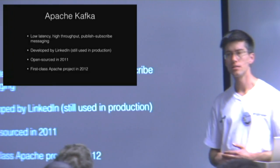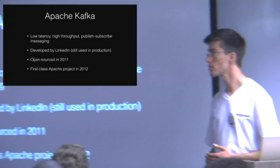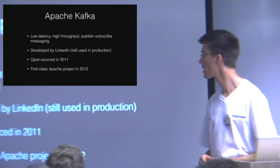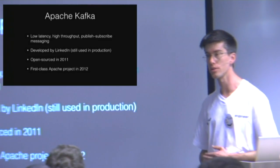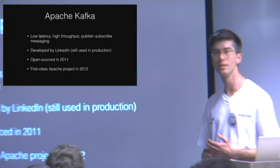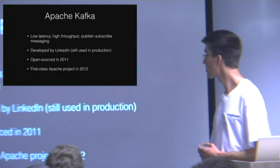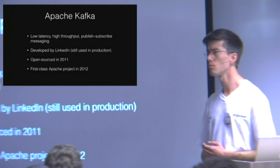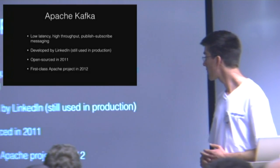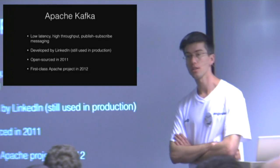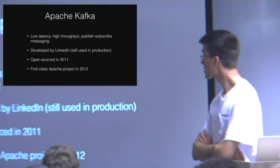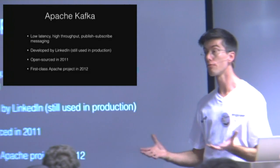It was originally invented by LinkedIn. They handle lots and lots of traffic. The most recent article with a number was written in March of this year, and they claim they generate about 800 billion messages a day. Peak usage is something like 11 million a second. They open-sourced the project in 2011 and it became a first-class Apache project in 2012, which is amazing for the rest of us. It's really cool software, really cool infrastructure.